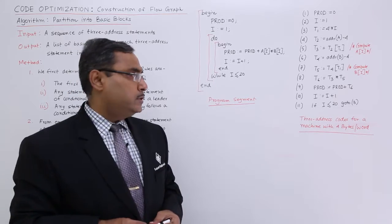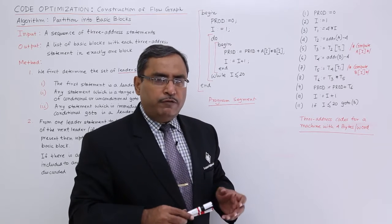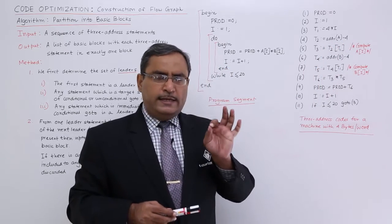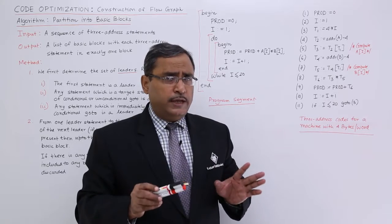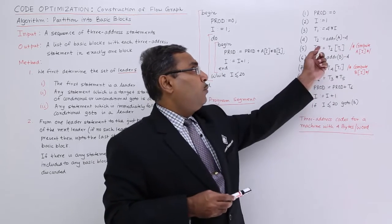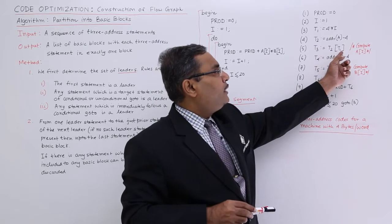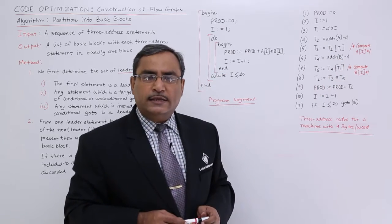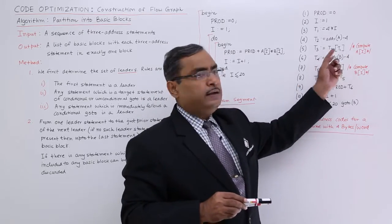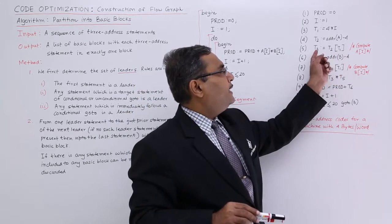Since the machine supports 4 bytes per word, t1 equals 4 times i. With initial i equal to 1, t1 gets the value 4. Then t2 equals address of a minus 4. Suppose array a has starting address 2000; then 2000 minus 4 equals 1996, so 1996 is assigned to t2. With t2 as base address 1996 and t1 as displacement 4, the resulting address is 2000. The content from location 2000 is assigned to t3.